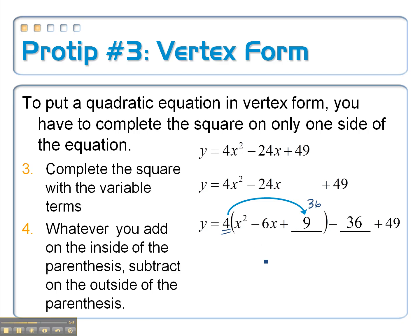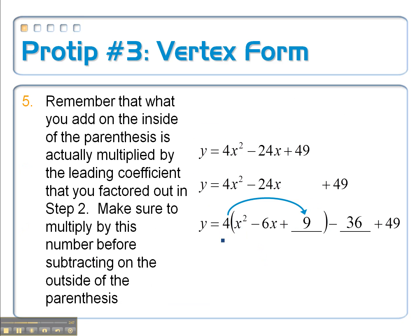Okay, so finally I put it all together. Rewrite this as y equals 4 times x minus 3 quantity squared. And then whenever I combine these two together, I get minus 13. So our vertex is at 3, negative 13.